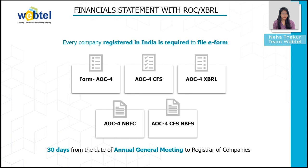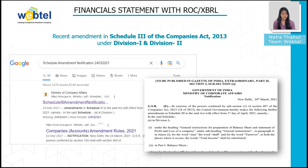Every company is required to comply with Schedule 3 of the Companies Act 2013 for preparation of financial accounts. A list of new amendments was released via notification on 24th March 2021 under Schedule 3 of the Companies Act 2013 under Division 1 and Division 2, applicable from financial year 2021-2022 onwards. When preparing the books of accounts, it is important to understand these amendments before closing.